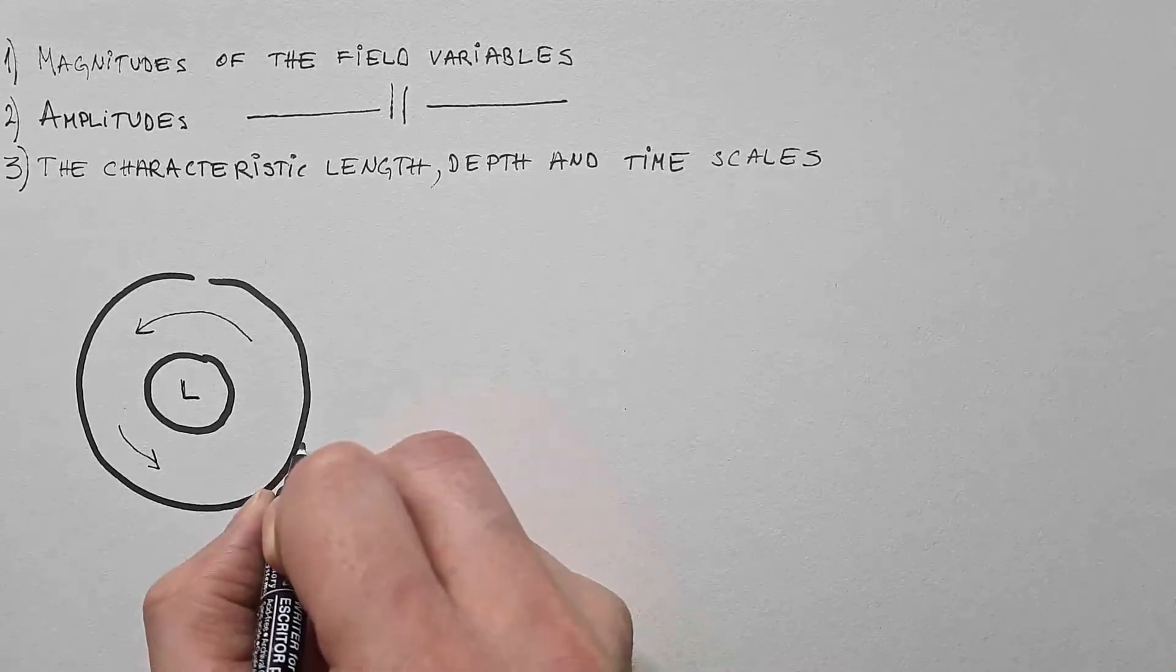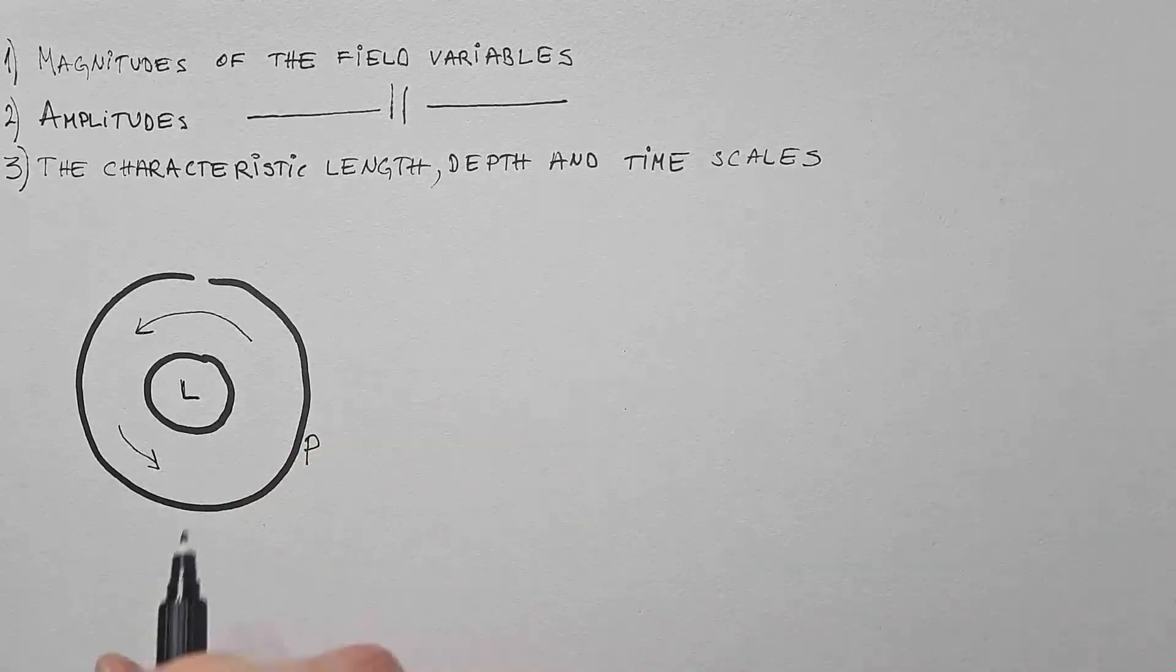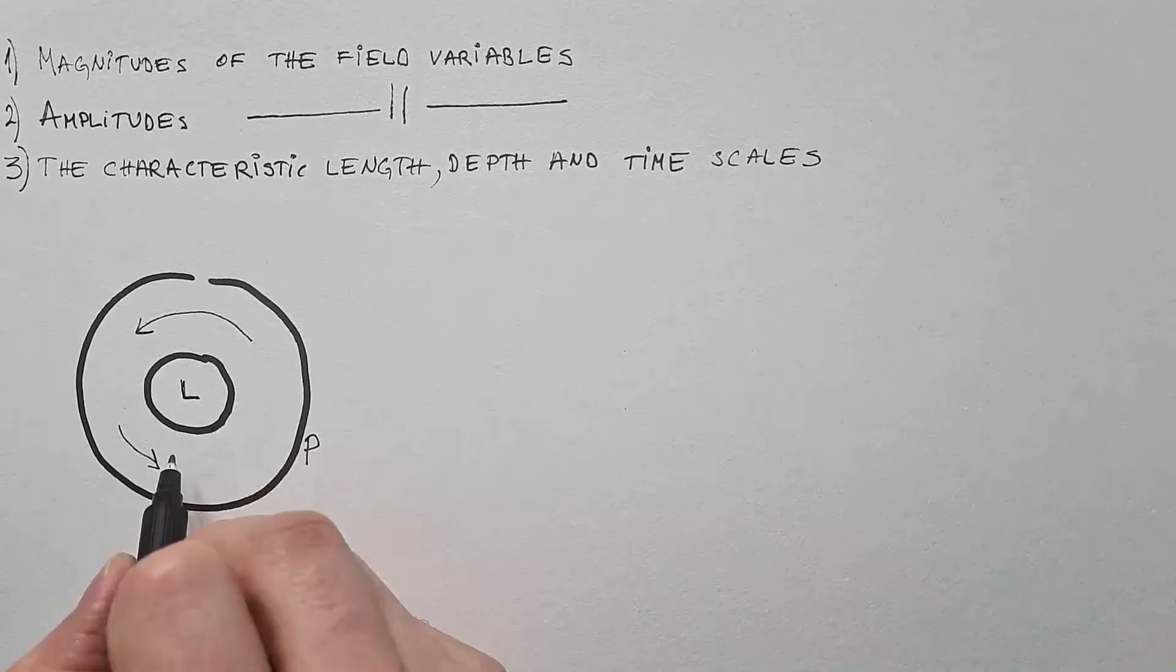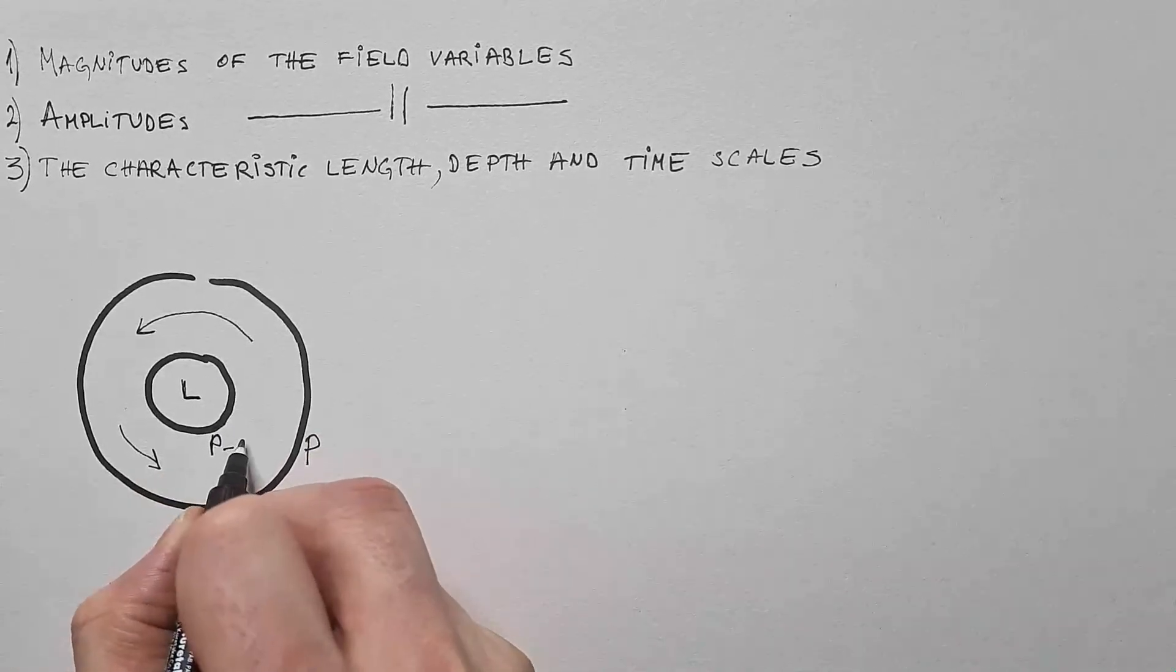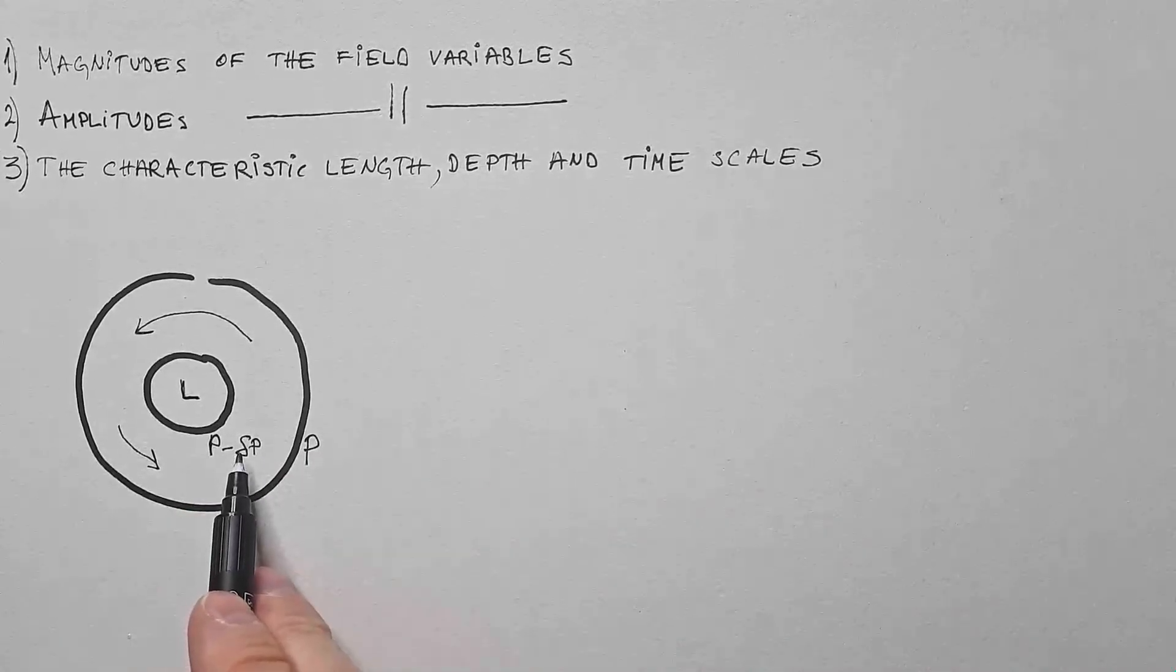So if I tell you that this is, for example, pressure P over here, because we have a low pressure in the center, then this isobar needs to be P minus some delta P, where delta P is positive.